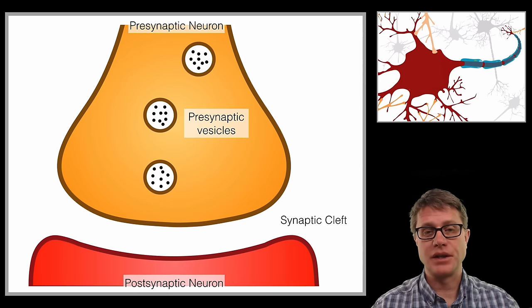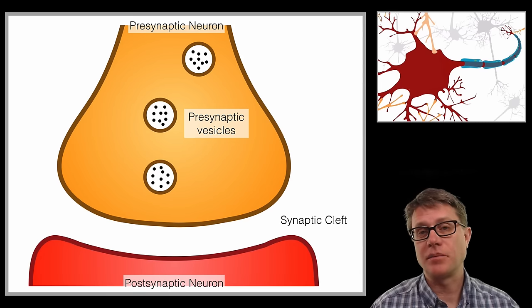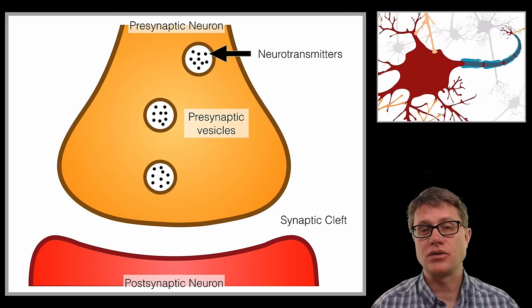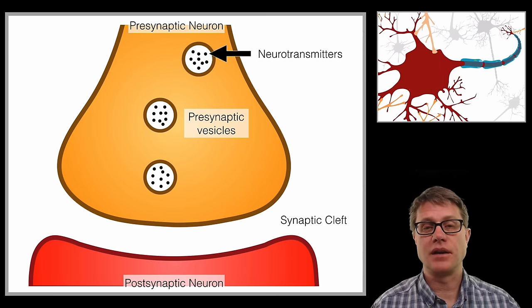Now there are structures that hold this in place. It is not just floating there. On the inside of that terminal bud we have synaptic vesicles and those are filled with neurotransmitters. Those are different chemicals, chemical messages that can be sent across that synaptic cleft.